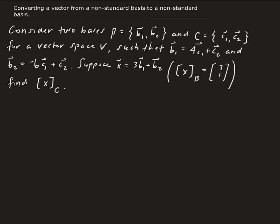And b1, the vector b1 is equal to the linear combination of c1 and c2, and the same thing for b2.